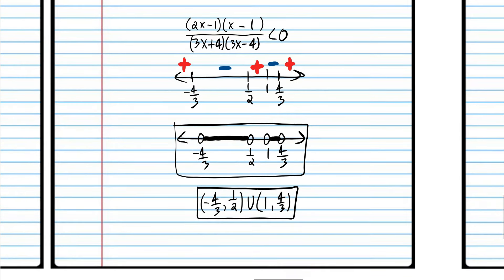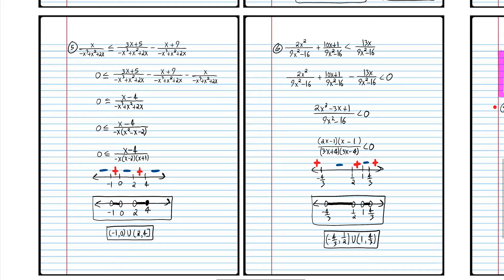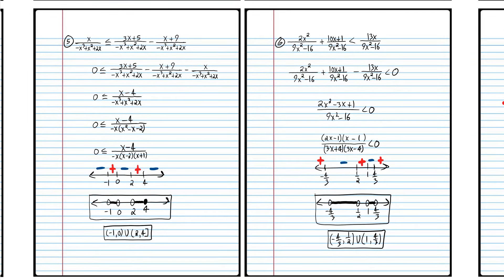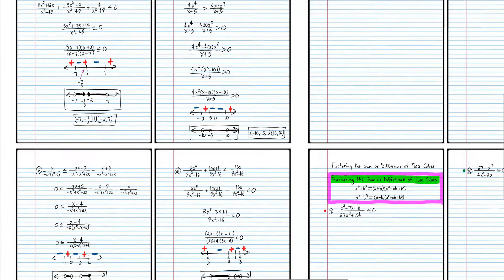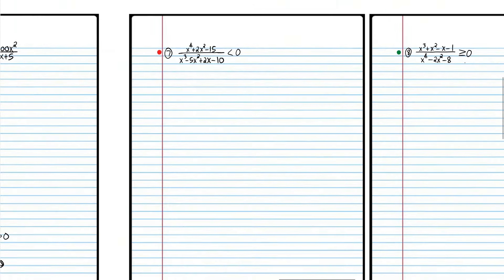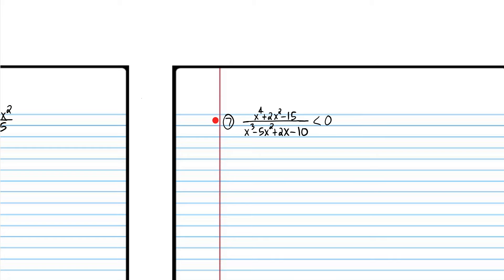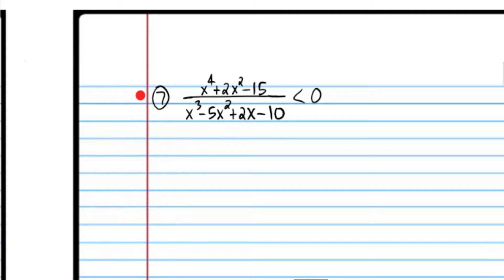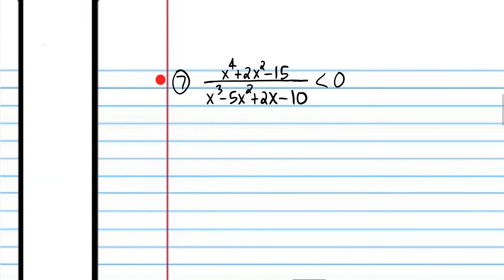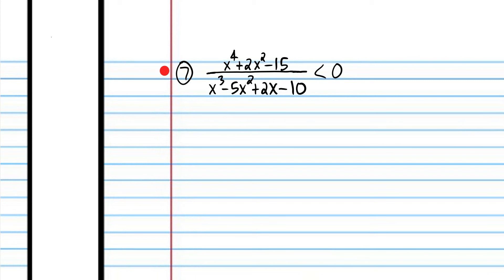If you got that right, excellent. You can take a picture of these problems. The next problem let's do together. Notice we don't have to move everything to one side of the inequality because everything's already on one side. And we don't have to combine everything to one fraction because it's already one fraction. So we can just move on to step three and factor.